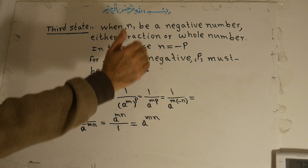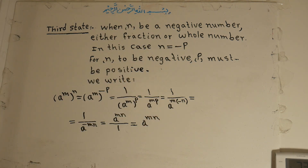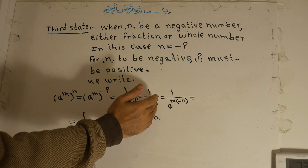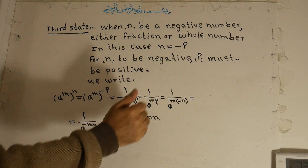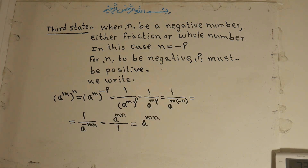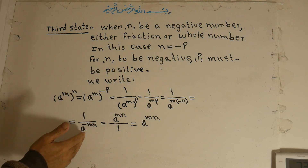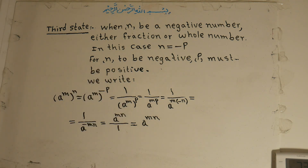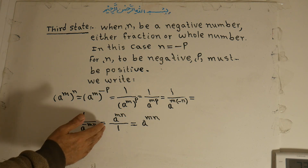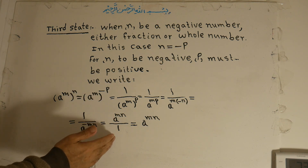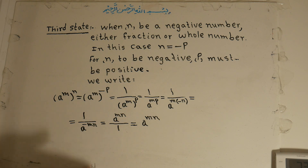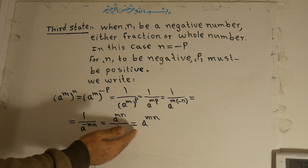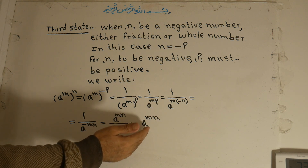Instead of p, we write negative n, so m times minus n equals minus mn. That gives 1 over a to the power of minus mn. Because the power is negative mn, we bring it to the numerator, giving a to the power of positive mn over 1. Since the denominator is 1, we write a to the power of mn.